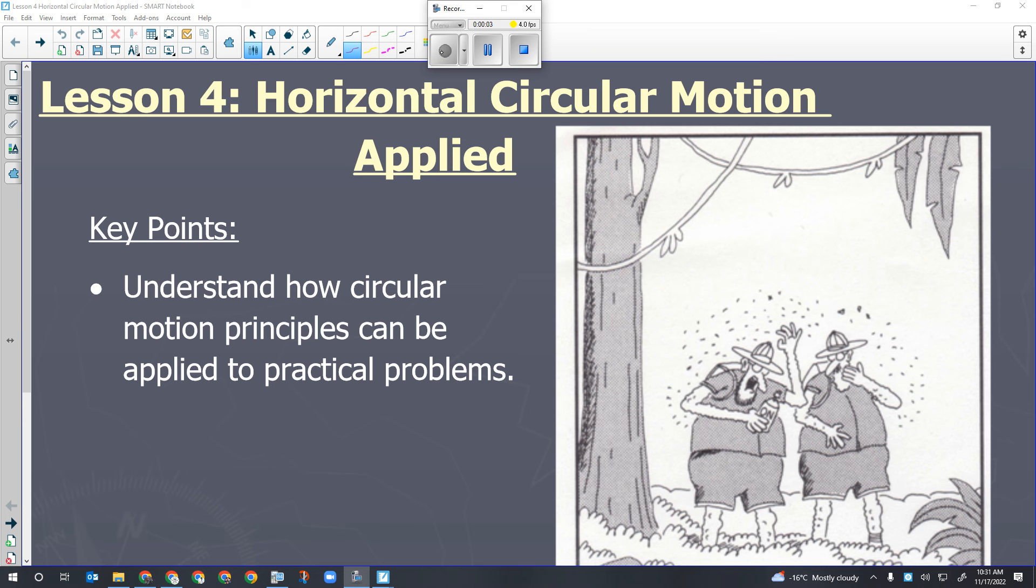So we're going to be looking at applications other than unbanked curves and banked curves for uniform circular motion today. One of those applications is artificial gravity, or being able to generate artificial gravity in the proper physical way, which fortunately for you guys, modern science fiction does a great job of showing the practical way to generate artificial gravity.